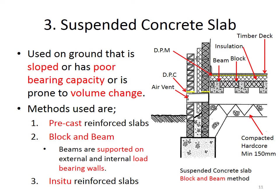The third type is the suspended concrete slab. This is usually used on ground that is sloped, or ground that has poor bearing capacity — where the ground can't take the weight of the floor slab, or where the ground is prone to volume change, such as drying out excessively or taking on a lot of moisture throughout the year, causing expansion and contraction.